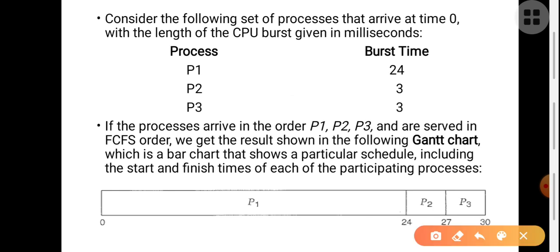Consider this simple example: a set of processes P1, P2, P3 which arrive at the CPU at time zero, with the length of the CPU burst given in milliseconds. CPU burst is how much time that process is going to use the CPU. The burst time for individual processes is: P1 = 24ms, P2 = 3ms, and P3 = 3ms.